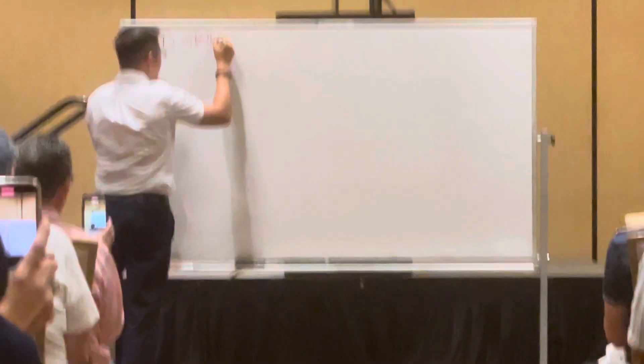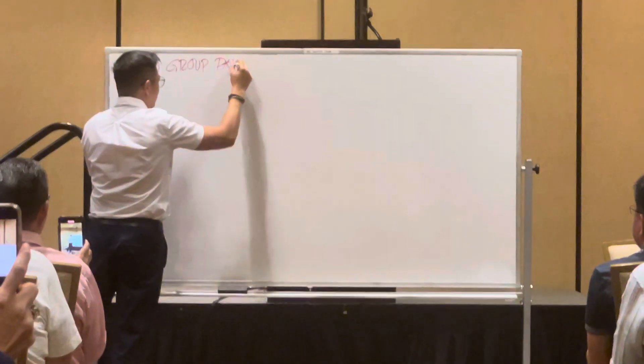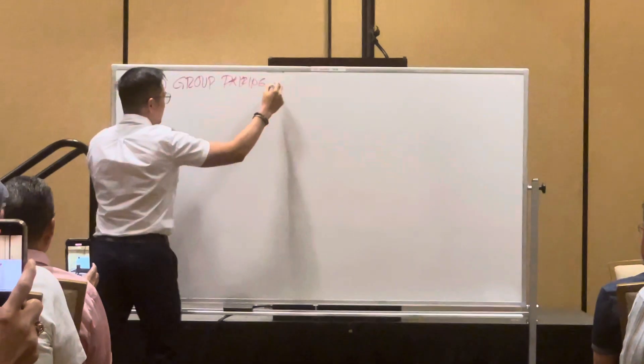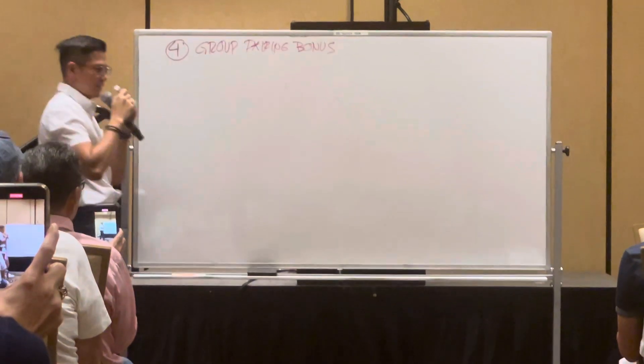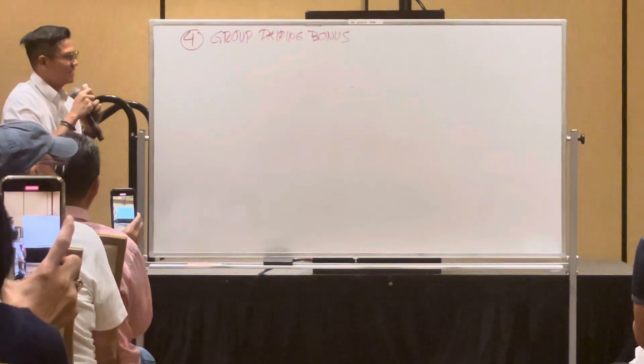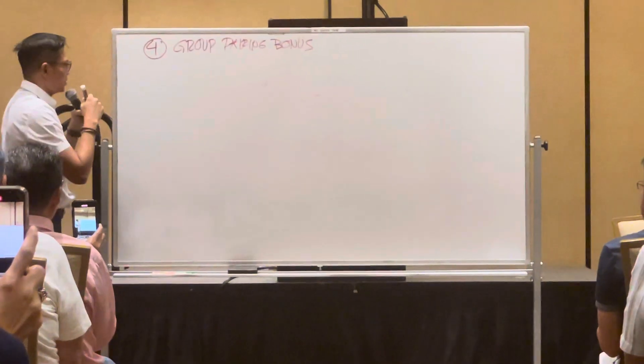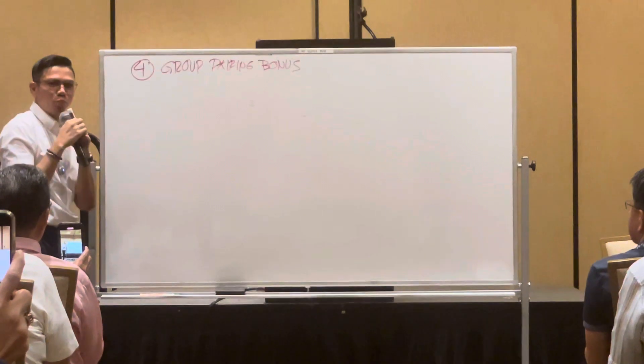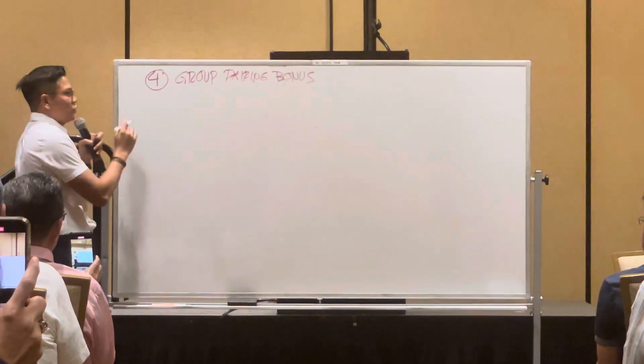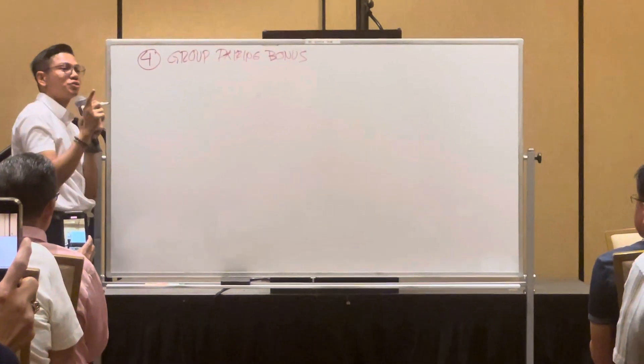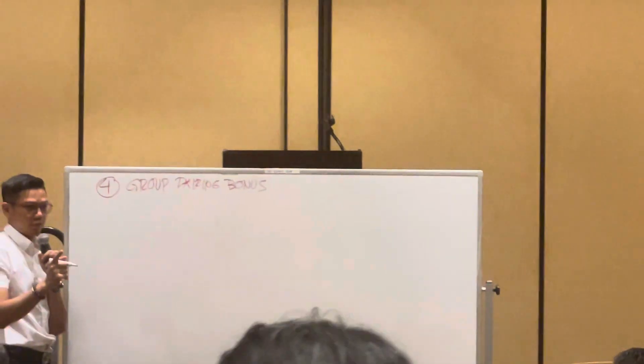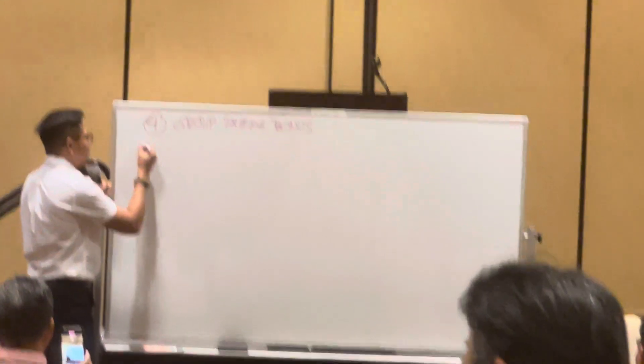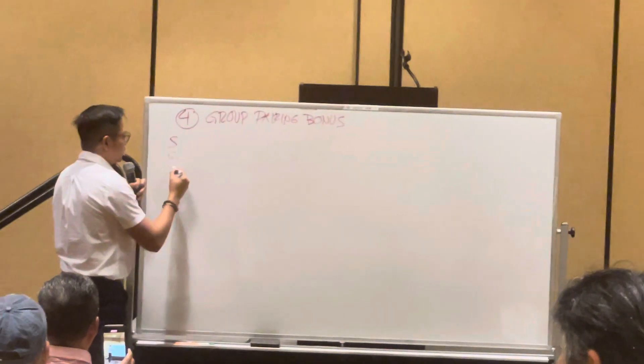Number 4 is Group Pairing Bonus. Alright, this is exciting. Before you talk about Group Pairing Bonus, you show them the percentage income based on the package they purchased. So a silver, a gold, and a diamond.